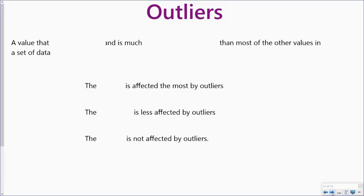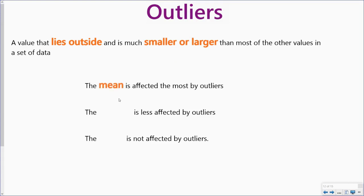Now let's talk about outliers. Outliers are values that lie outside and are much smaller or larger than most of the other values in the data set. The mean is affected most by outliers. The median is affected a little bit less. And the mode really is not affected at all by outliers.